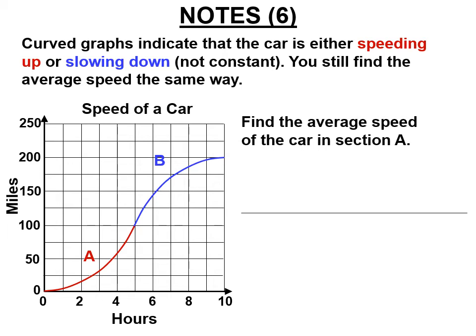Curved graphs indicate the car is either speeding up or slowing down. You still find the average speed the same way. Section A — the way that curve bends, that's a speeding-up vehicle. When you do these, you definitely have to do the whole section. On the straight sections you have options, but on curves you must find average speed because it's not going the same speed the whole time — it's going slow at the beginning and fast at the end, and you're asked for the average.